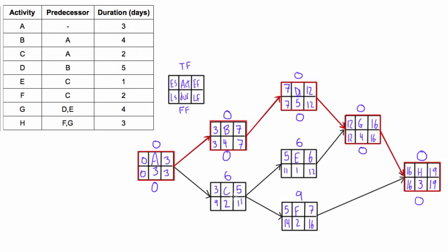For activity C, it has two successors, so we choose the smallest early start among them — they both happen to have the same early start of 5. So we get 5 minus 3 minus 2, giving C's free float as 0. For activity E: 12 minus 5 minus 1, so it has a free float of 6. And for activity F: 16 minus 5 minus 2, giving a free float of 9.